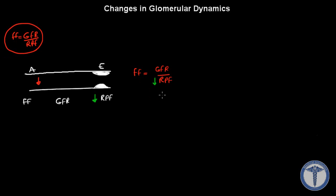Based on this, we can answer the rest of the question. Renal plasma flow and filtration fraction are opposite to each other based on this formula. So if renal plasma flow decreases, our filtration fraction will increase. And since filtration fraction and GFR must move in the same direction, if filtration fraction increases, GFR is also increased.